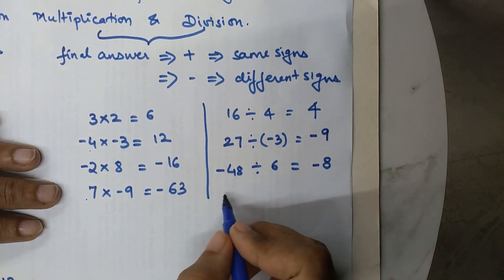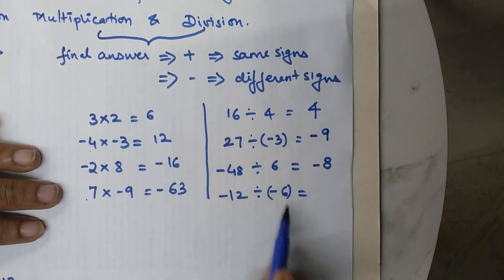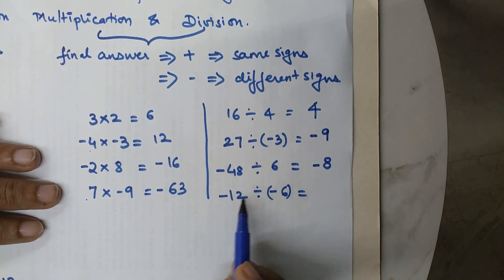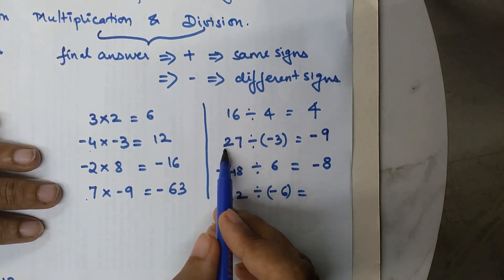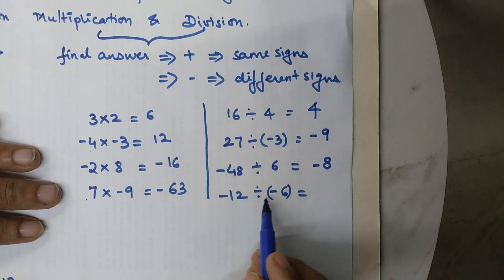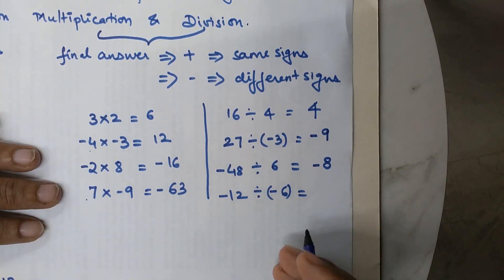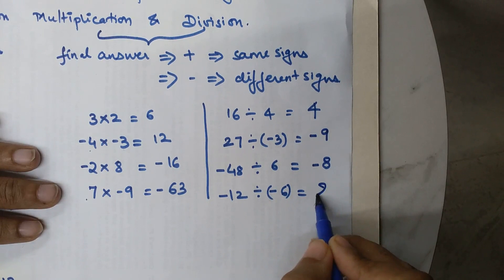Now, minus 12 divided by minus 6. Note that I put brackets only when two signs appear beside each other, to give clarity in calculations with many steps. Here both 12 and 6 are negative — same signs — so negative times negative gives a positive answer. 12 divided by 6 is 2, so the final answer is positive 2.